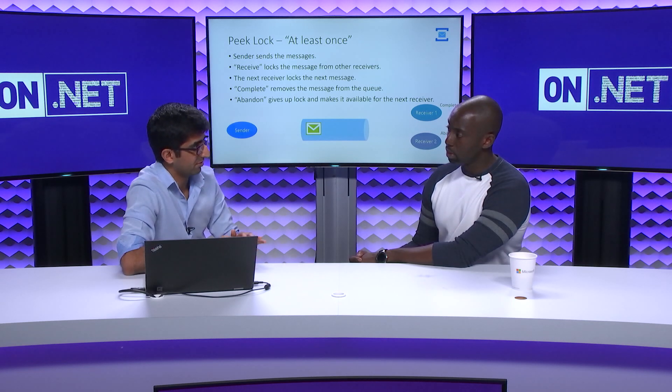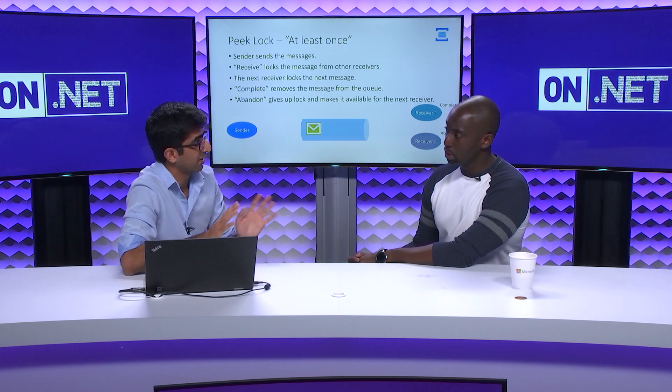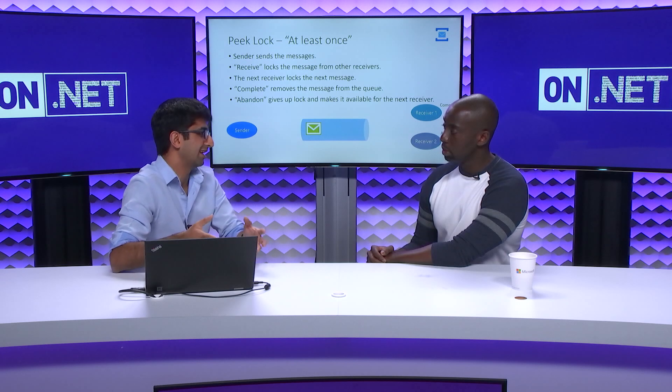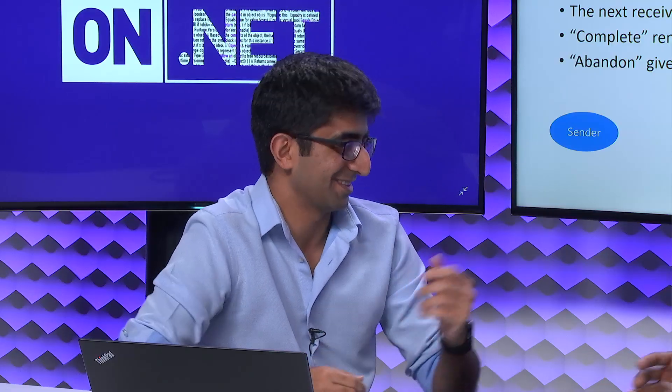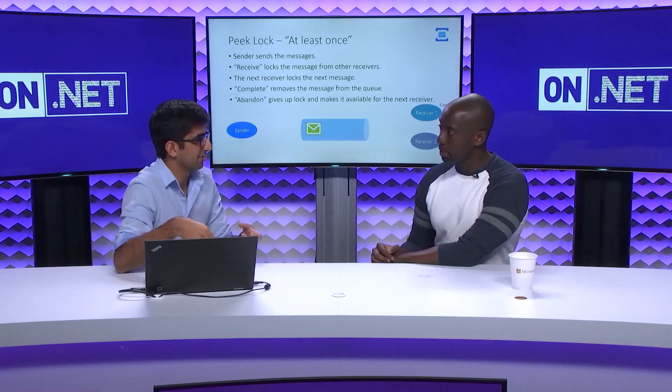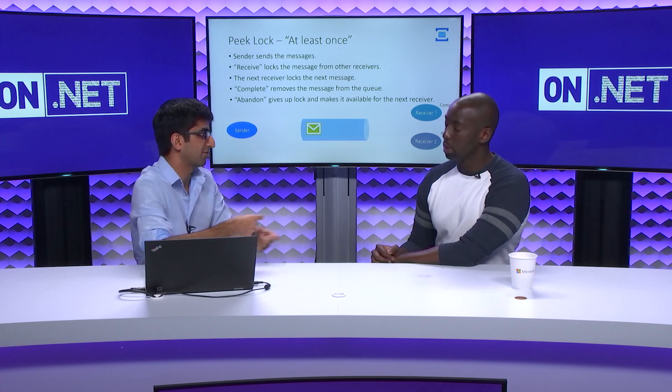If for whatever reason the receiver crashes and restarts with no idea what to do with that message, the lock will expire within that time frame and the message becomes available again — it never really left the queue, but it wasn't available for others to work on. That's exactly what we mean by competing consumers: multiple consumers are trying to lock messages on the queue. If someone crashes, the next one can pick it up. You never really have an issue of losing messages.